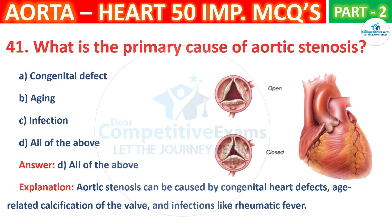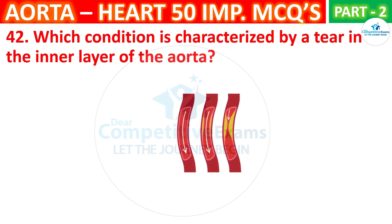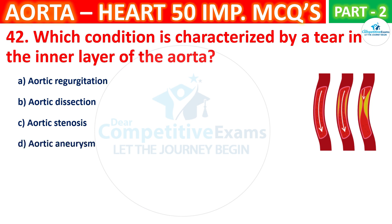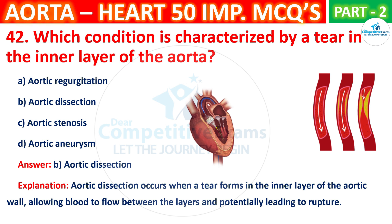Question No. 42. Which condition is characterized by a tear in the inner layer of the aorta? Your options are: Aortic regurgitation, Aortic dissection, Aortic stenosis, or Aortic aneurysm. The correct answer is B, that is aortic dissection. Aortic dissection occurs when a tear forms in the inner layer of the aortic wall, allowing blood to flow between the layers and potentially leading to rupture.